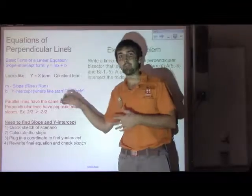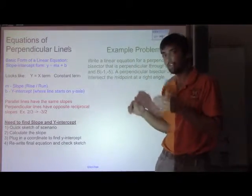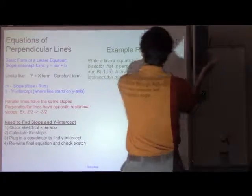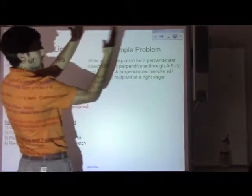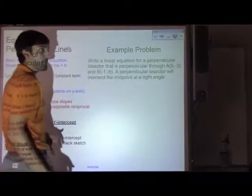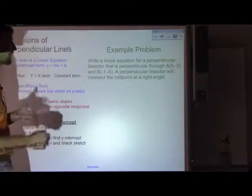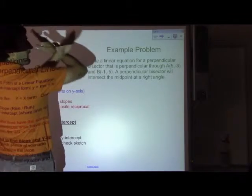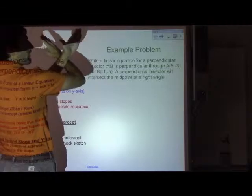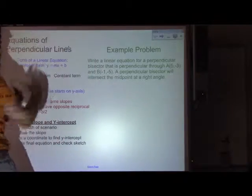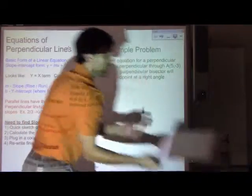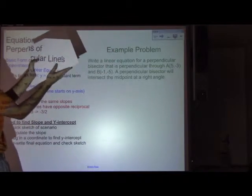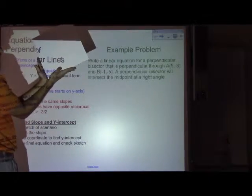Unlike parallel lines, which have the same slope and never cross, perpendicular lines cross at a 90-degree angle. They make a cross, which creates a 90-degree angle like the corner of a square. So if I had two lines like this, they would be perpendicular.